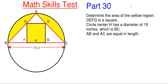This will be our 30th part in our math skills series. We have to determine the area of the yellow region shown inside of this circle. We're given some information: DEFG is a square, the overall circle has a center of H and has a diameter of 15 inches, which is B to C. We're also told that AB and AC of this outer triangle are equal in length.